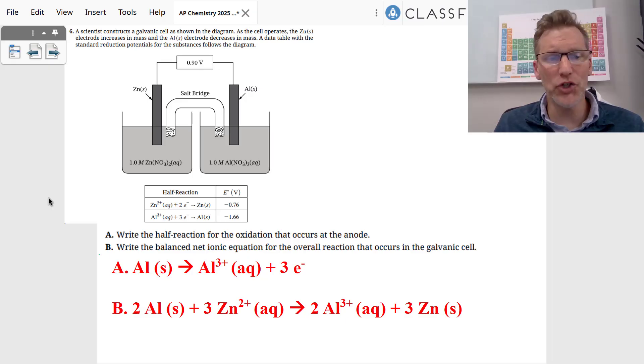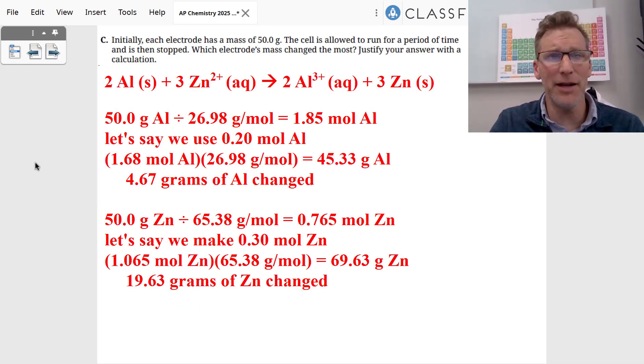And so now we want to combine our two equations together, which means the aluminum solid is going to react with zinc ions to produce aluminum ions and zinc solid. You have to balance the number of electrons, which means you're going to multiply the zincs by three and the aluminums by two. And that's part A and part B.